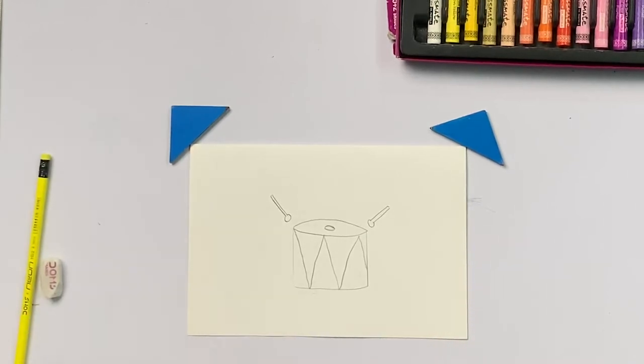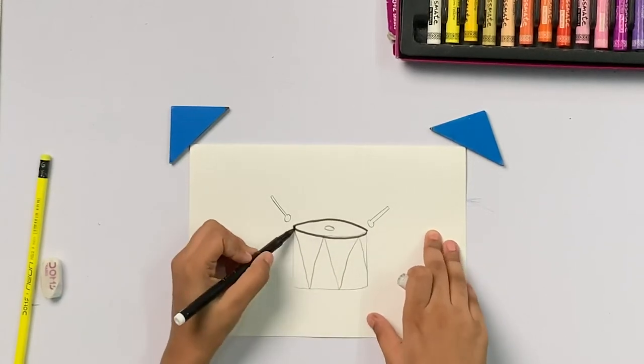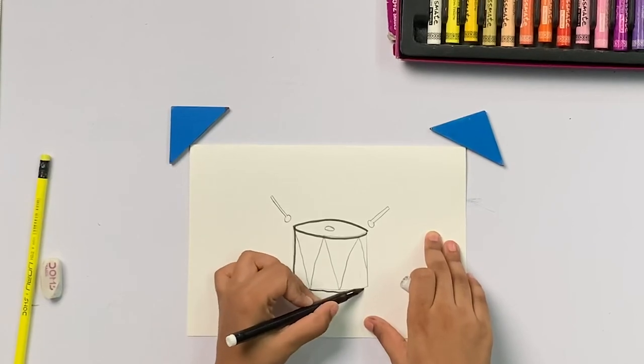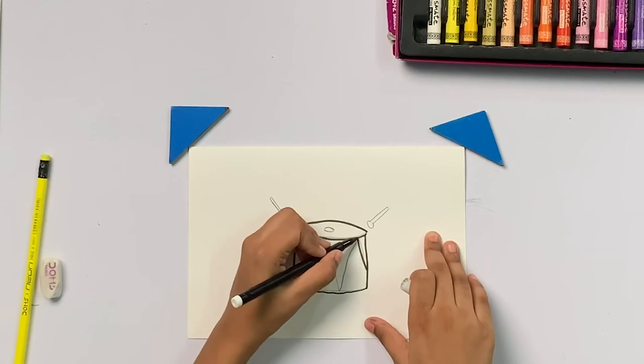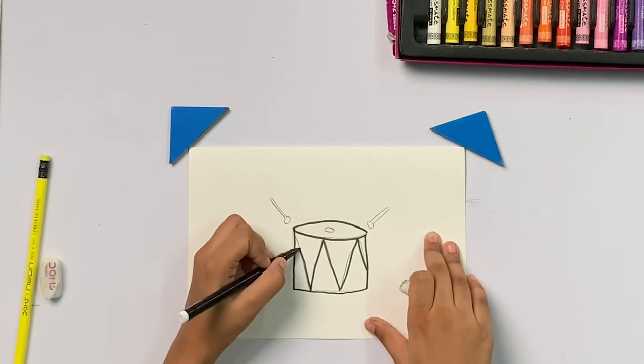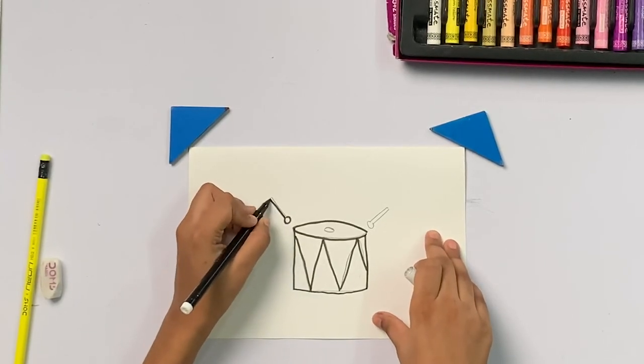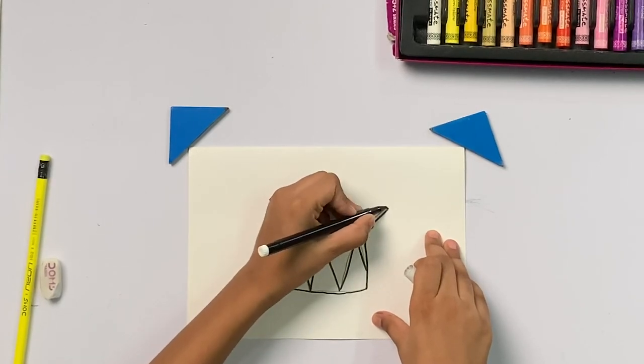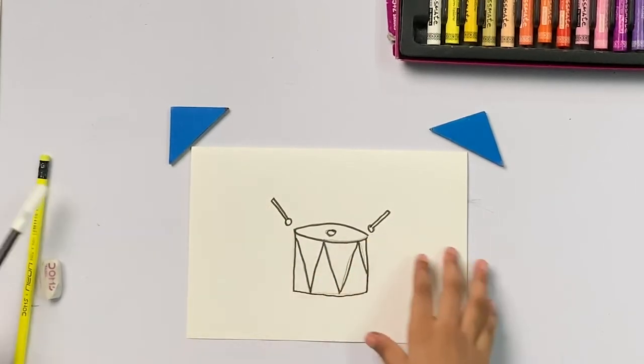Now we will outline this. Let's draw on my fingers. And now the stick. And the oval. Now the outline is done.